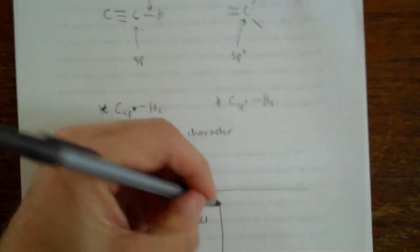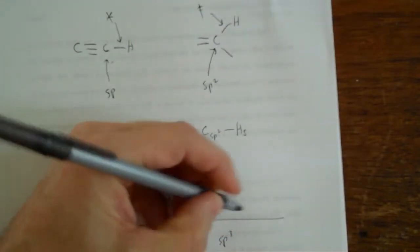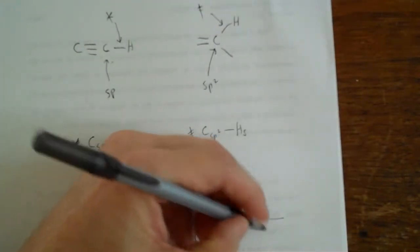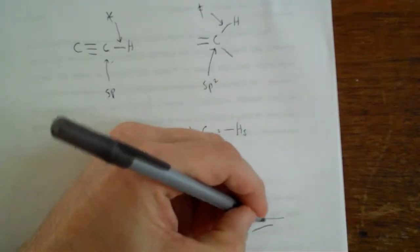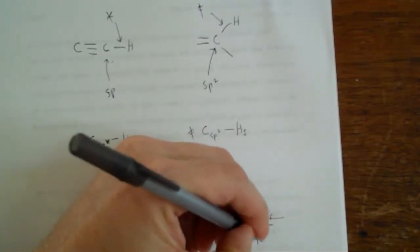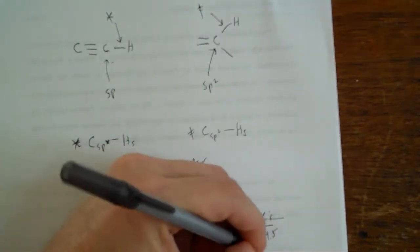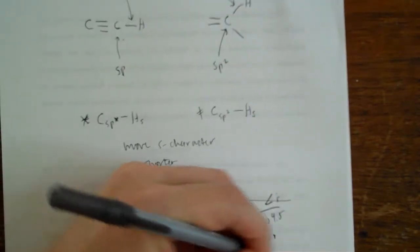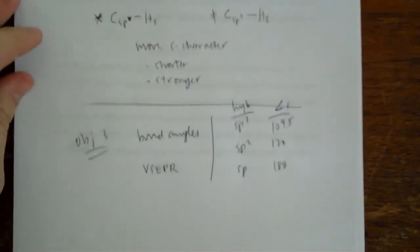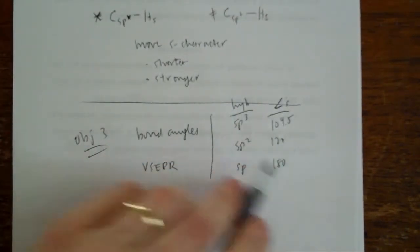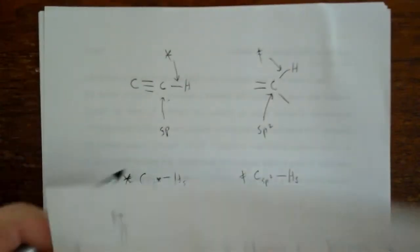And VSEPR is what you want to look up for that. Remember, I can tell you, but you're going to be better off looking it up. Sp3 hybridization angles about 109.5, sp2 120, sp 180. And we really spent a lot of time in GenChem talking about why that is. So let me not go into that right now.